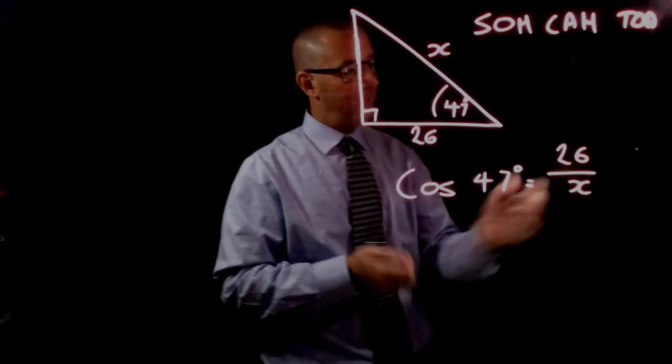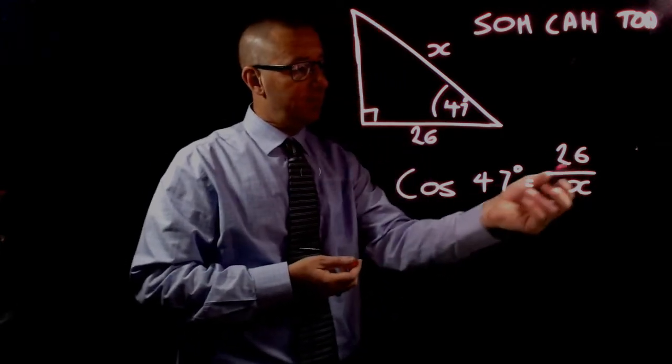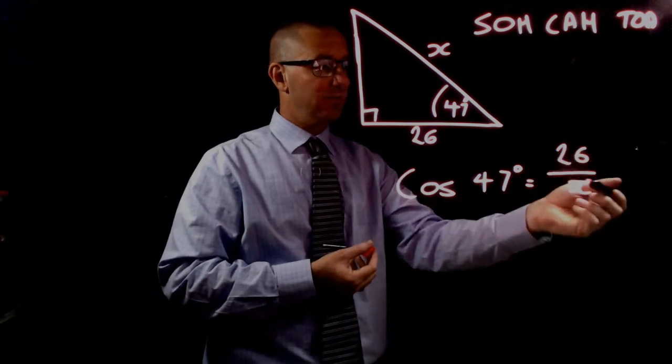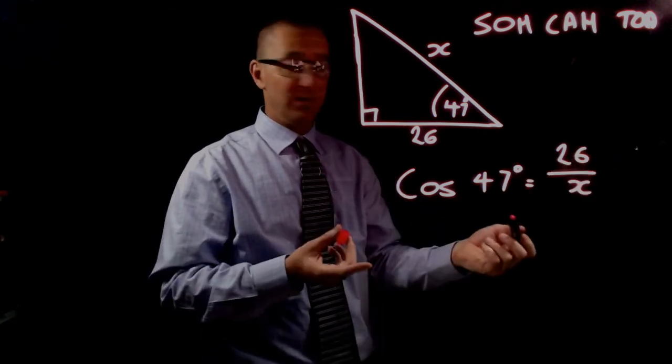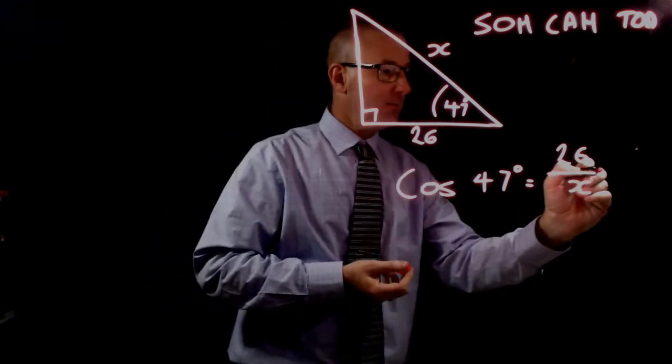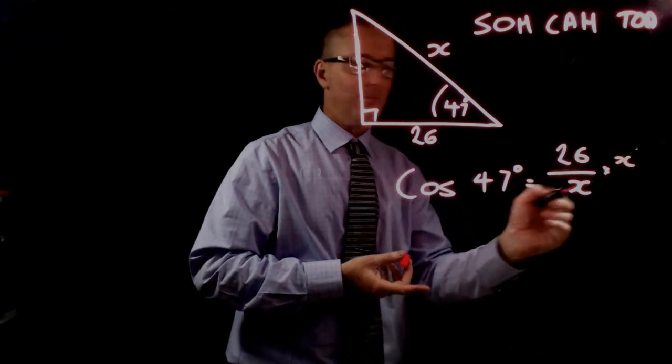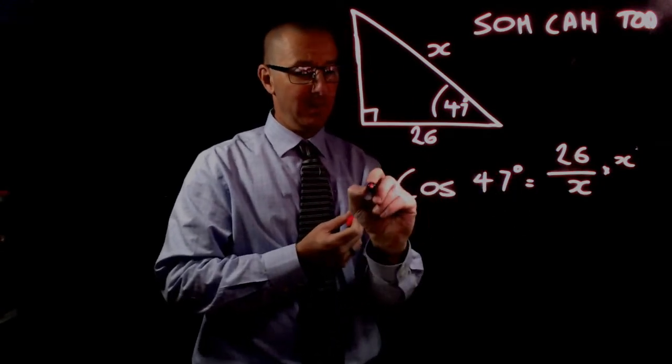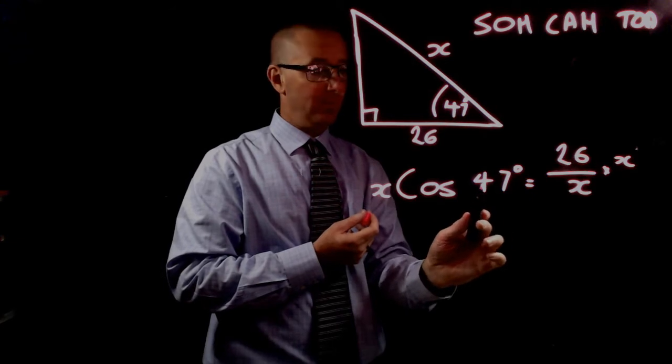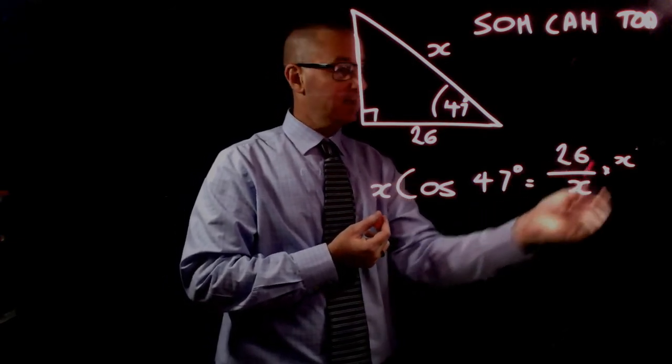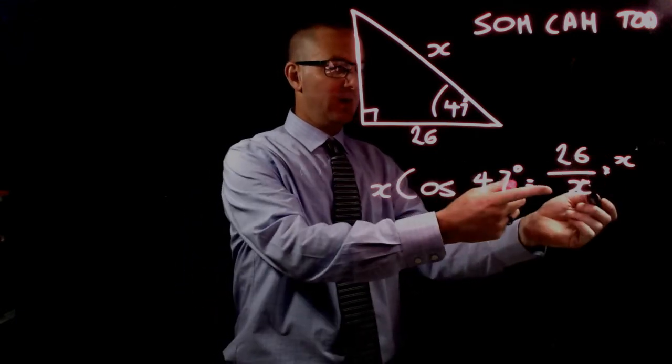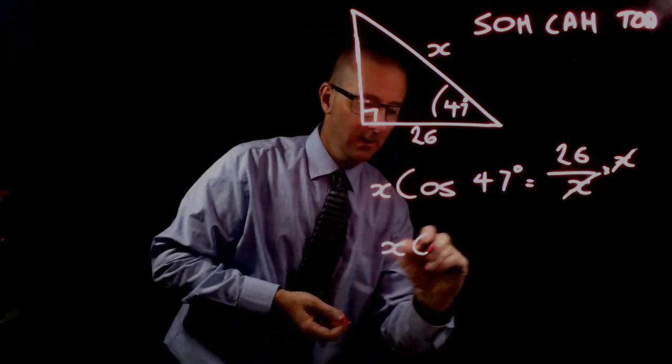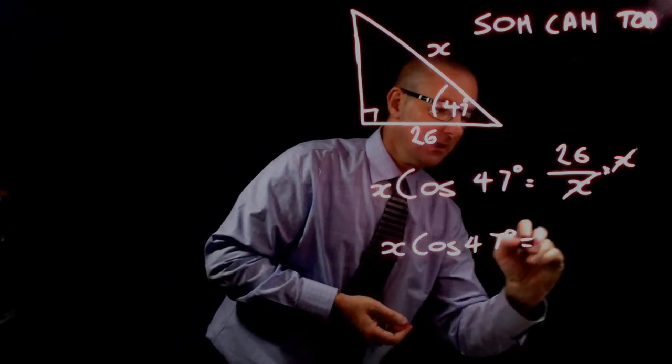First, we take x away from being the denominator. The inverse operation of division is multiplication. We multiply both sides by x, giving us x times cos 47 degrees equals 26 divided by x times x. The divided by x and times x cancel out, leaving x times cos 47 degrees equals 26.